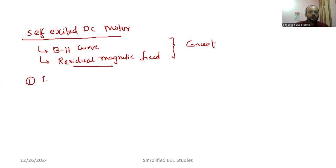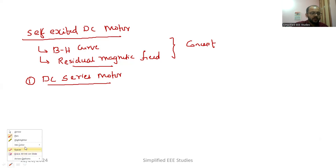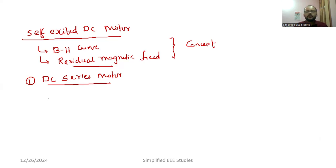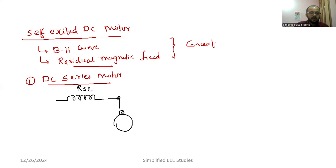Now I am going to talk about DC series motor — kindly make a note, this is very important for exam purposes. In the DC series motor, first you draw the magnetic field producing unit, that is called field winding. The resistance of field winding is RSE. The field winding is connected in series to the armature — they are connected in cascaded or serial fashion.